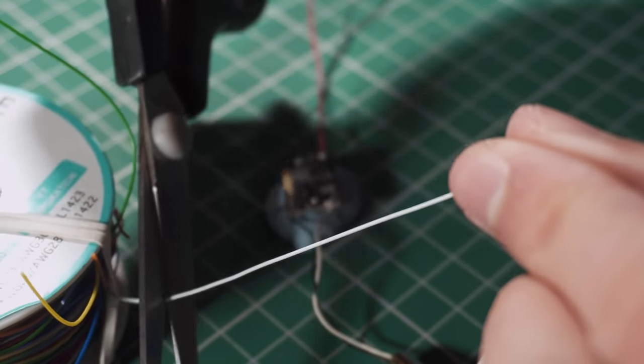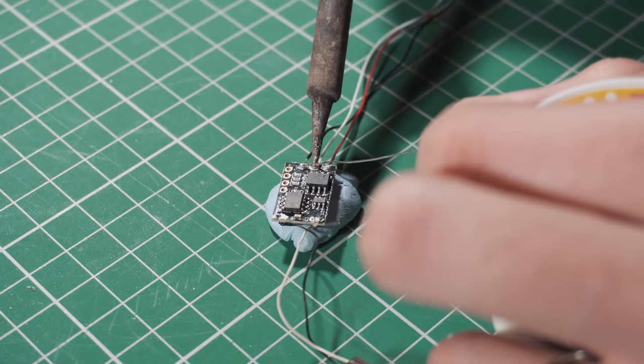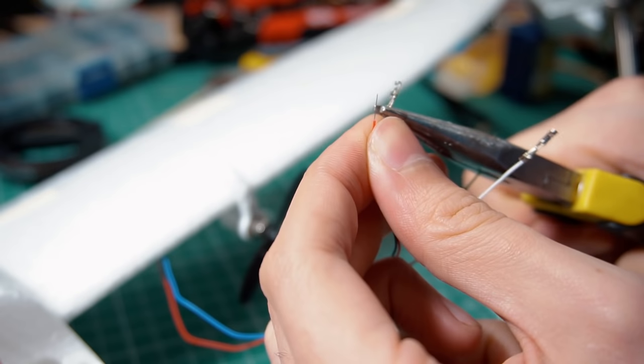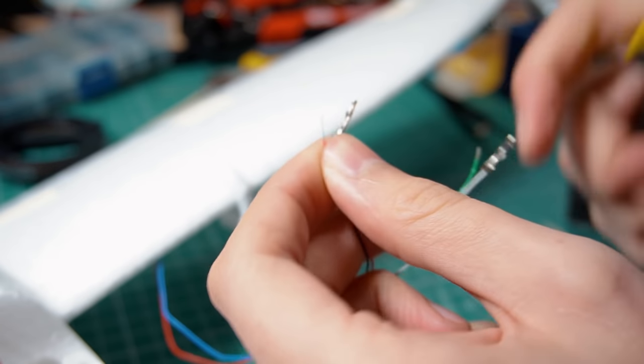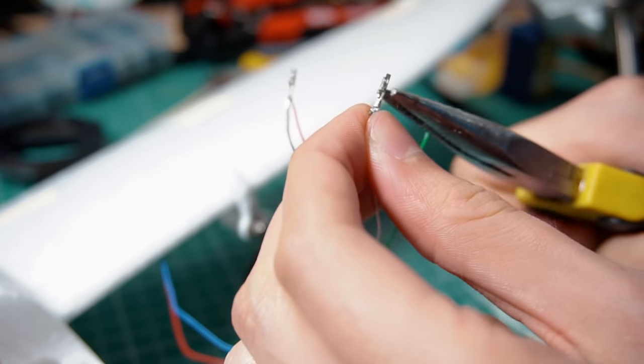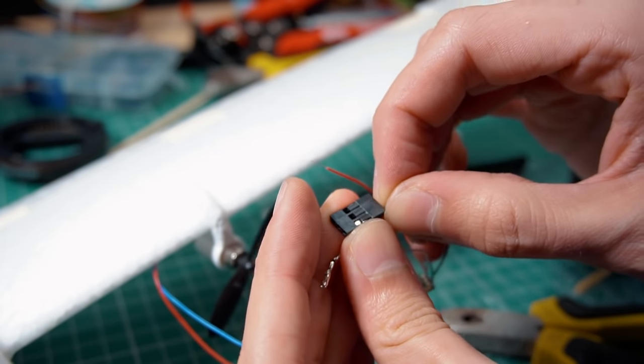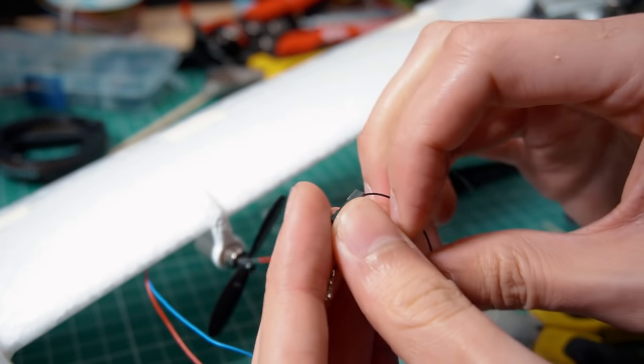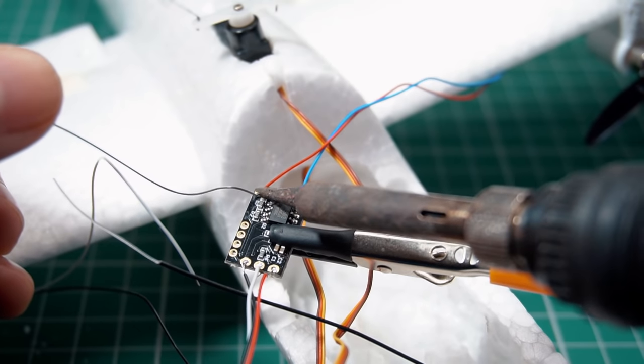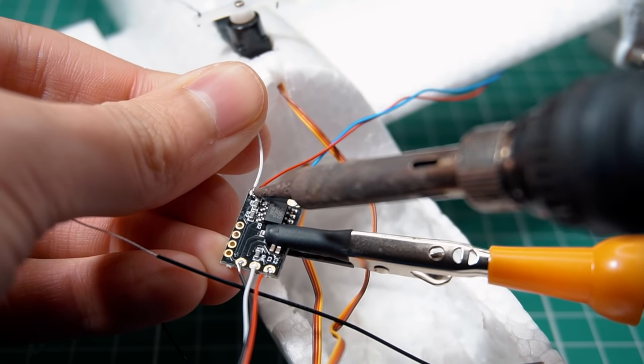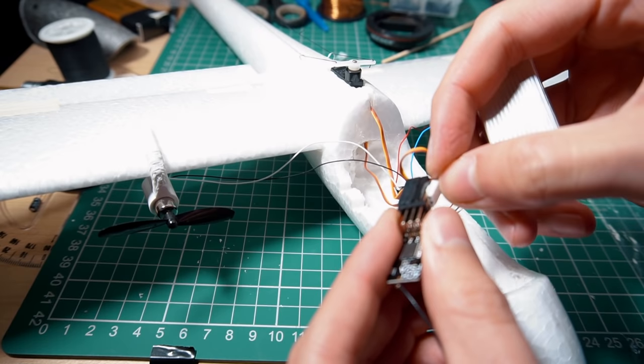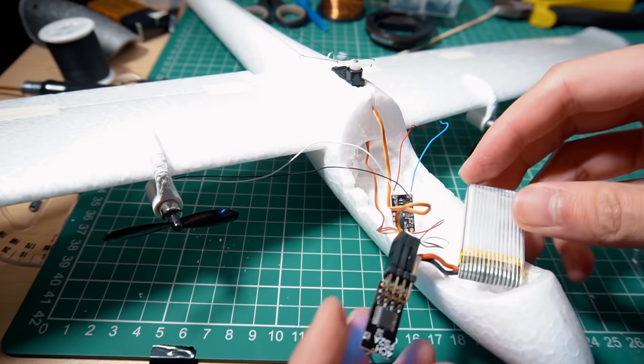I'm also going to put my own servo connectors and wires to this speed controller to be connected easily to the receiver. Once we have done all the connections we make the first test of the motors.